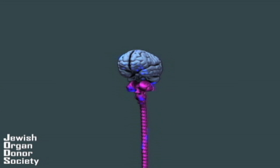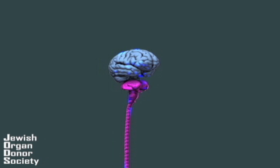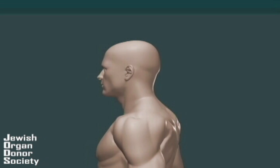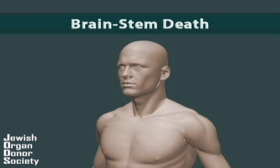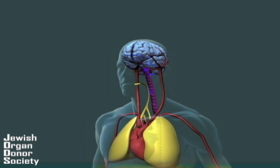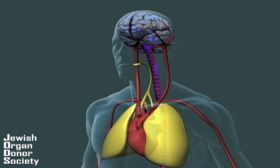If the cortex is seriously damaged, the person might enter coma and lose consciousness. But even in coma, a person might still feel pain or respond to stimuli. And sometimes a comatose patient might regain consciousness. Brain death is however different from coma. It is a term used to describe the whole brain dying, both the cortex and the brainstem.